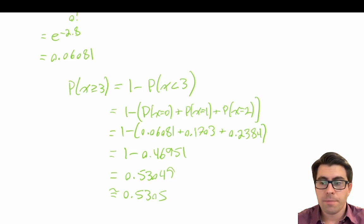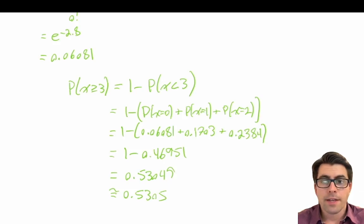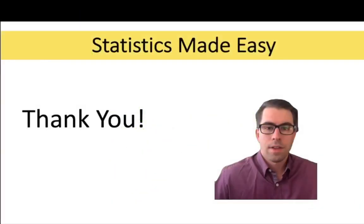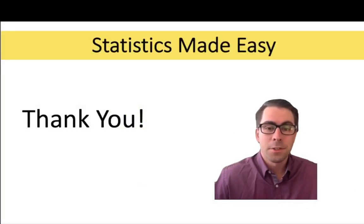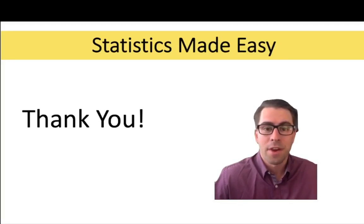In this video, we did practice problems on the Poisson distribution. We learned how to calculate the probability that X equals a discrete value, as well as how to modify our lambda when dealing with different time intervals. If you found this video helped make statistics easy, consider giving it a like and subscribing to the channel. We'll see you next time.